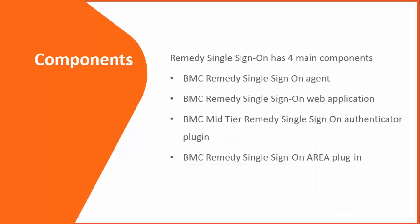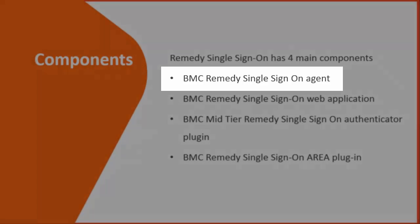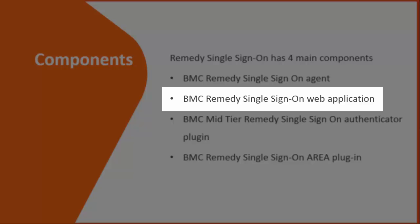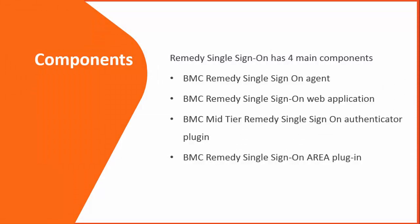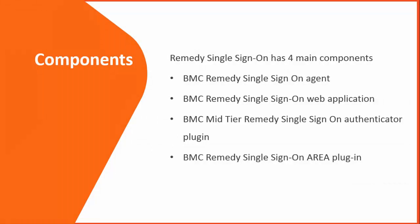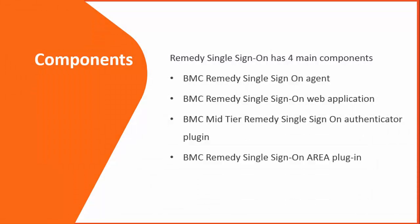There are four major components of BMC Remedy Single Sign-On. The Remedy Single Sign-On agent protects resources from unauthorized logins and directs login requests to the right domains, defining the right server to communicate with in a multi-server environment. The Remedy Single Sign-On web application authenticates users and handles validation requests from agents. The Authenticator plugin passes user and token information from mid-tier to AR on logon. The Remedy Single Sign-On area plugin gets information from the BMC Remedy mid-tier API call as an authentication token and makes a REST API call to the Remedy Single Sign-On web application to verify the token's validity.